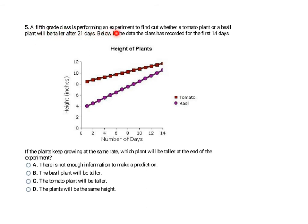This one says a fifth grade class is performing an experiment to find out whether tomato plant or basil plant will be taller after 21 days. Below is the data the class has recorded for the first 14 days. If the plants keep growing at the same rate which plant will be taller at the end of the experiment. So you kind of have to think about okay this line keeps going up at the same steepness and this line keeps going up at the same steepness, eventually they're going to cross. And it looks like if we keep going out 16, 18, 20, 22, it looks like that the basil line is going to get higher before we get to 21 days. So the basil plant will most likely be taller which is choice B.